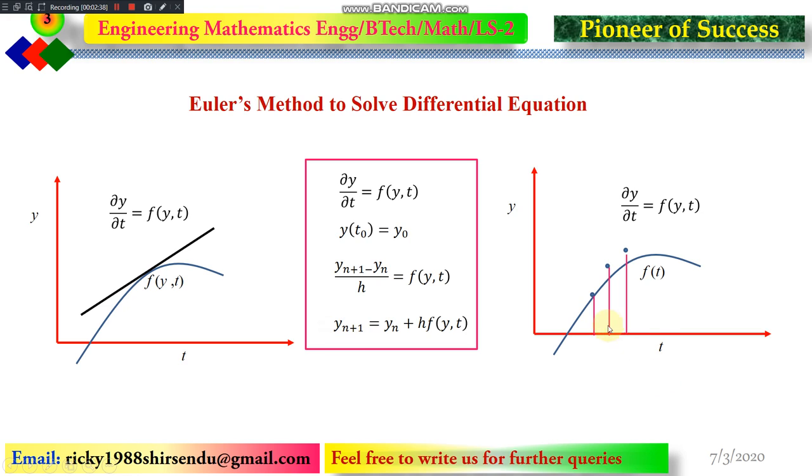So the concept is this value is known and this value is coming from here. So this is t equal to t_0. So we know this value, and after putting the value in this equation, we are getting the value for y_1, then for y_2. So in a similar way, we are guessing the values.